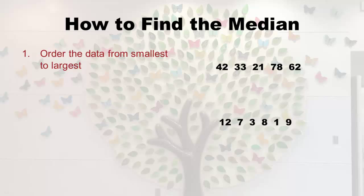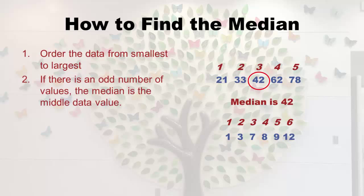Once ordered, we replace the numbers with their positions. For the top data set — the odd one — the positions are 1, 2, 3, 4, 5. It's the middle position. If we had seven data points, we'd go out to position 4 and that would be the median. With odd values, you put them in order, number them, and take the middle number. That's the median — it's 42 in this example.